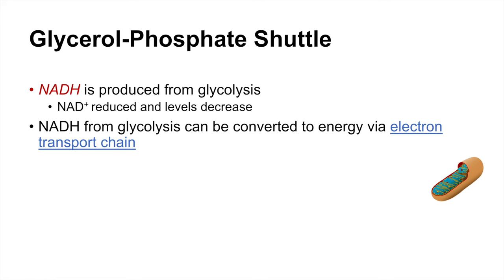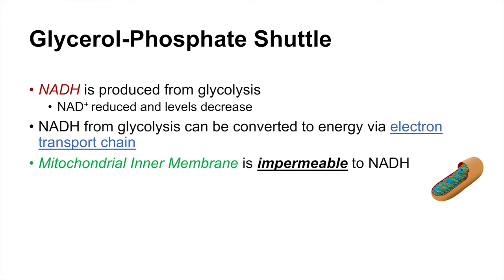The electron transport chain is within the mitochondria — it is along the inner membrane of the mitochondria. However, the problem is that the mitochondrial inner membrane is impermeable to NADH. So NADH produced in the mitochondria via the TCA cycle is okay — it's already in the mitochondria and can be processed via the electron transport chain. But NADH produced from outside of the mitochondria, such as from glycolysis, has to somehow get into the mitochondria and through the mitochondrial inner membrane.